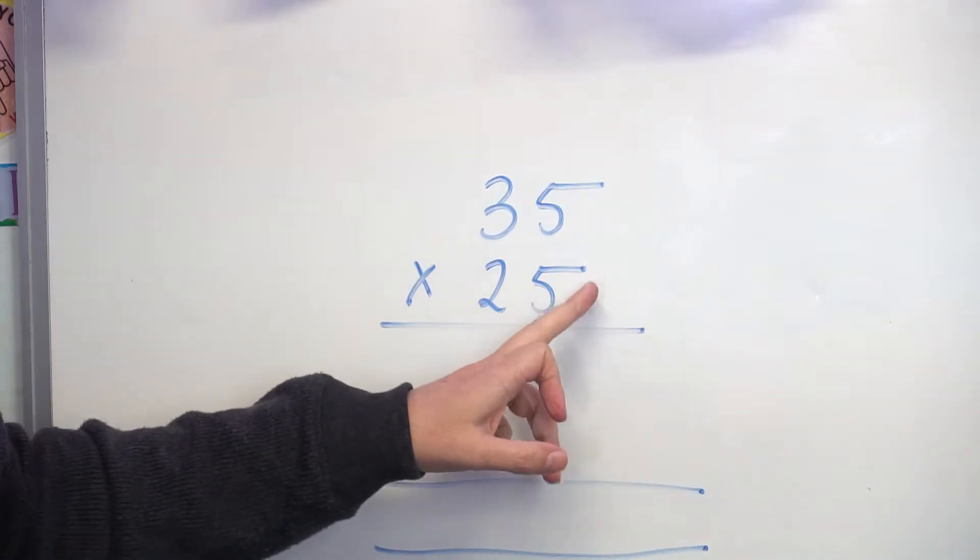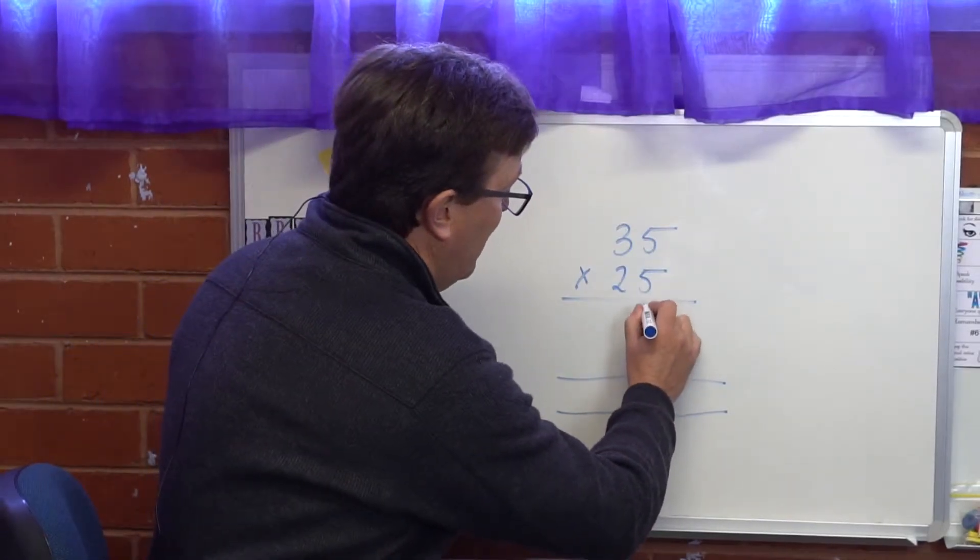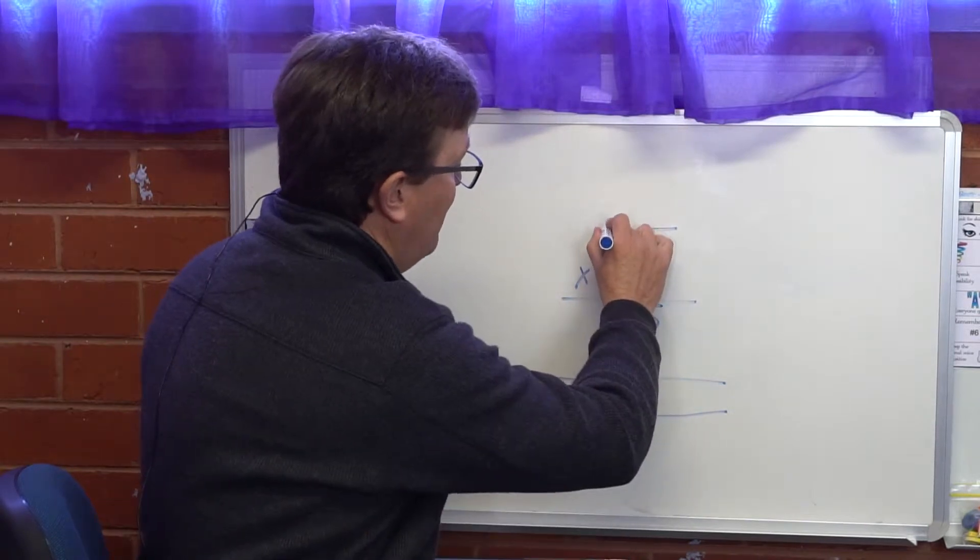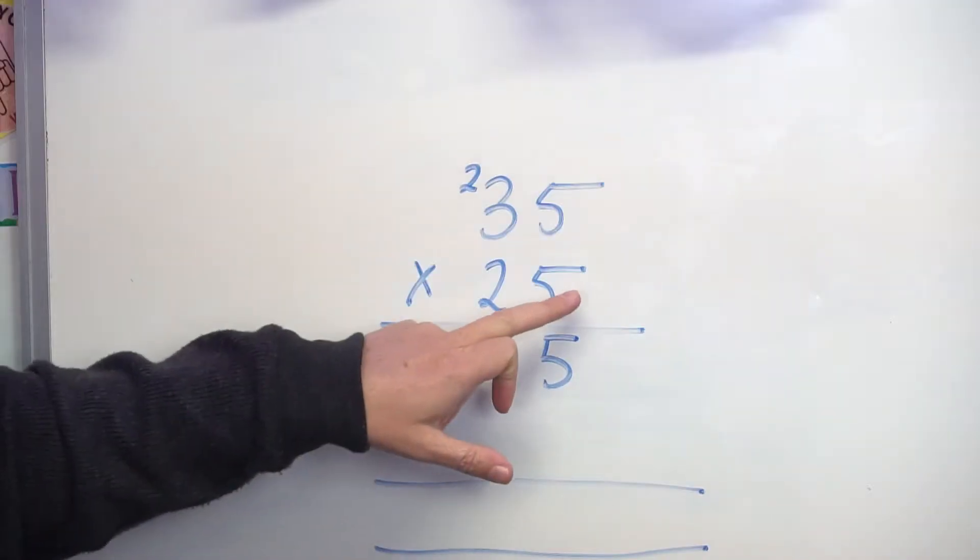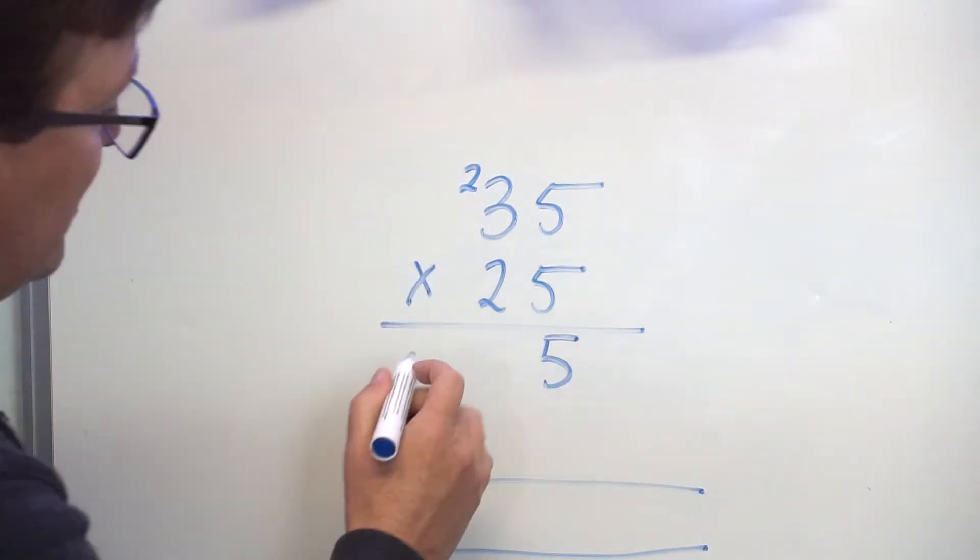So we start off with our ones again. 5 times 5 is 25. So I put the 5 in the ones column, and I carry my 10 over into the tens column. 5 times 3 is 15, plus 2 is 17.